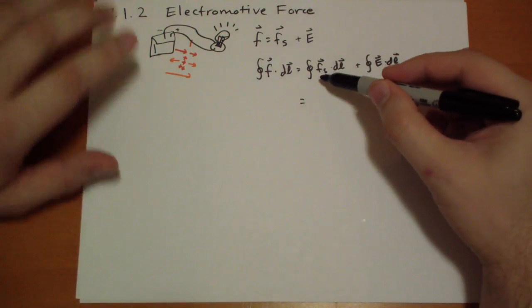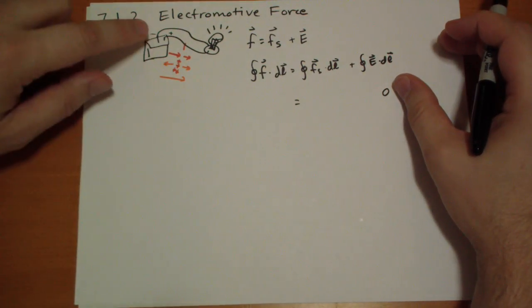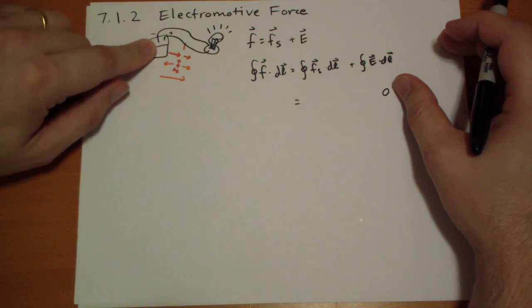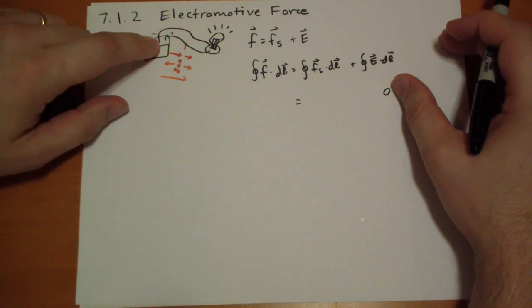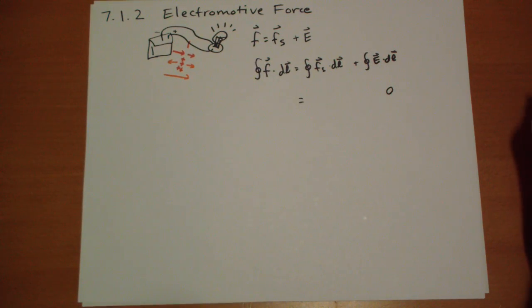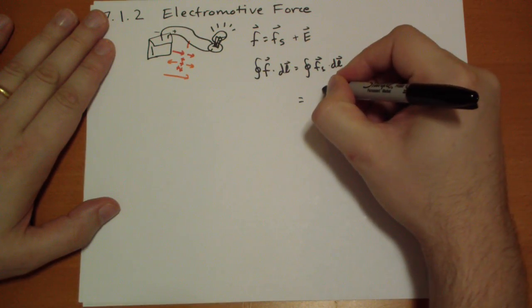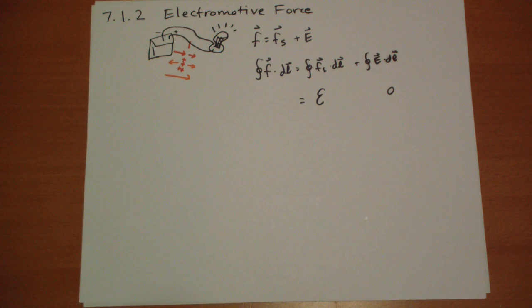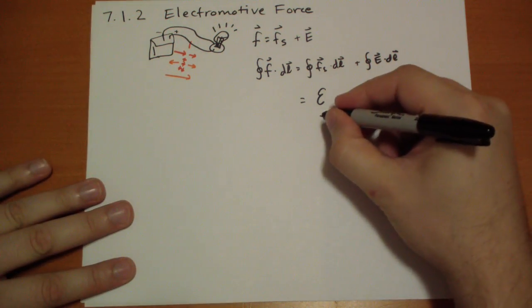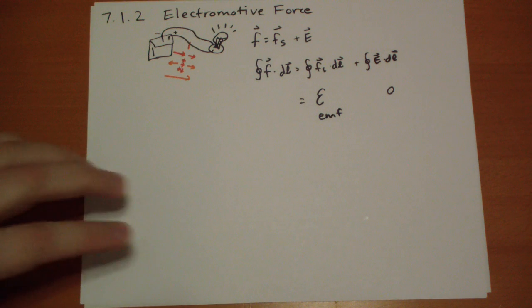And so what you end up with is the only force, really, when you add a source force to a circuit, every point along that circuit just feels that source, transmitted through the electric field. And so we're going to call this the EMF, Epsilon, capital E, all lowercase, not uppercase.